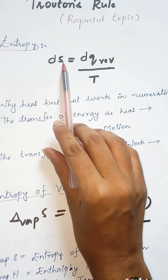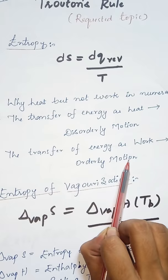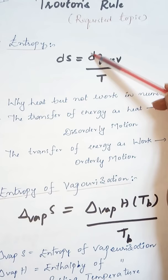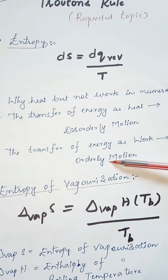Whereas transfer of energy as work is an orderly motion. That is the reason we consider the heat transfer but not work, because energy is not transferred as work because of its orderly motion.